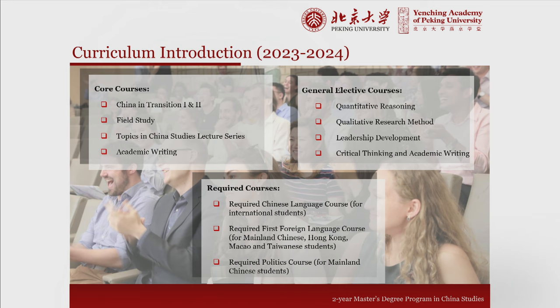Our flagship course is China in Transition, parts one and two. It's a full-year, two-semester interdisciplinary look at contemporary China. The first semester is a large class where all Yanjing scholars are in the lecture hall together, co-taught by 12 to 15 leading professors at Peking University, with modules on the Chinese political system, history, economy, culture, and society, combined with smaller discussion sections. In the spring semester, we focus on field research. You select a section taught by one of the faculty members who co-taught the large group class in the fall—choosing the professor whose research interests most align with your own—and that professor guides you and your classmates to individual or small group field research projects.